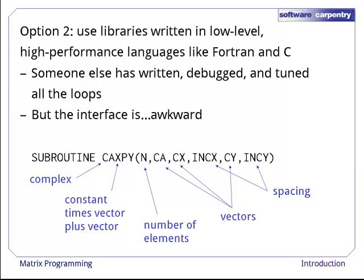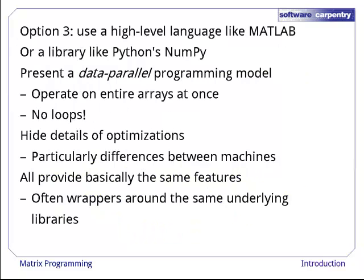These libraries have been written, debugged, and tuned by people who specialize in matrix calculations, but their interfaces are hard to use. For instance, this Fortran subroutine is part of a package called LAPACK, and performs the operation of a constant times a vector plus another vector.